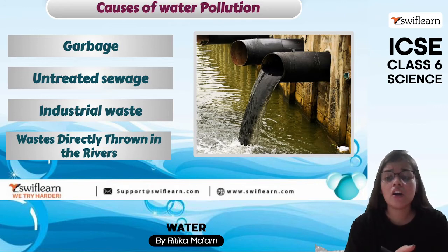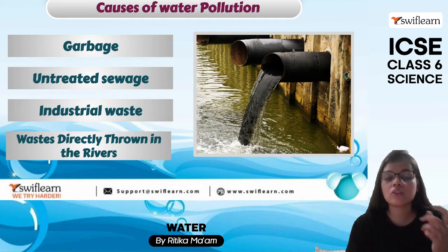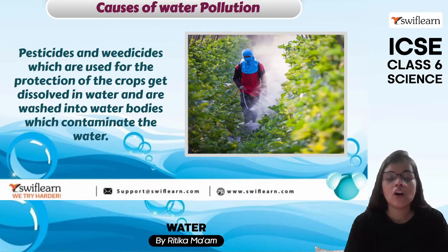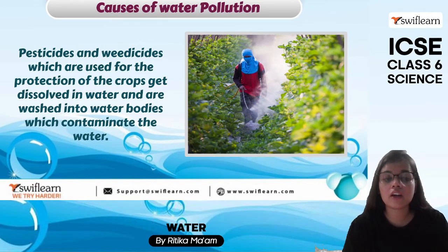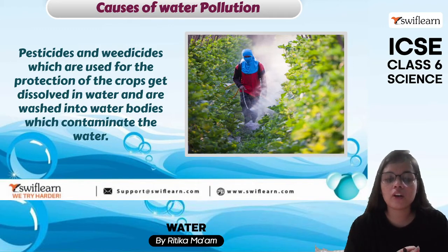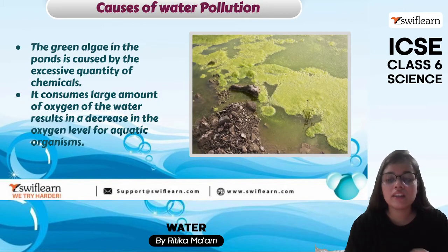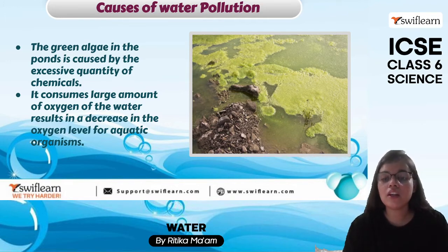We throw garbage, dump untreated sewage, and industrial waste directly into water, leading to water pollution. In agricultural sectors, pesticides and weedicides used to protect crops sometimes dissolve and wash into water bodies, polluting them. Green algae can also be seen in water bodies, caused by chemical discharge into the water.